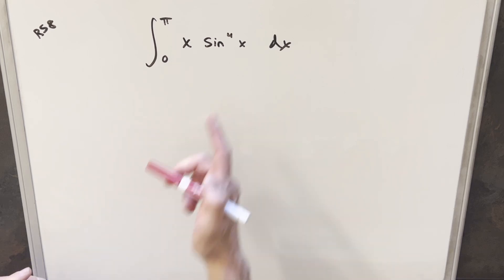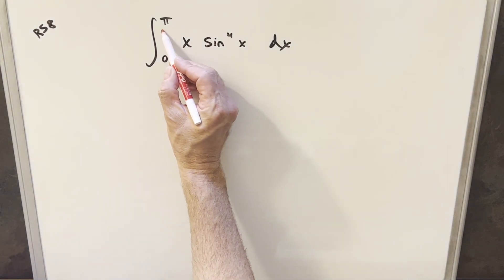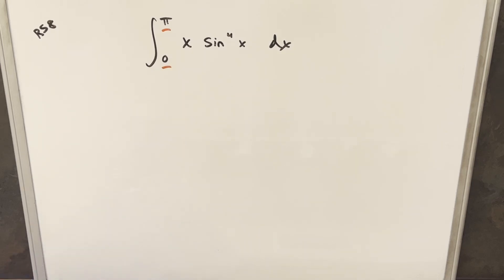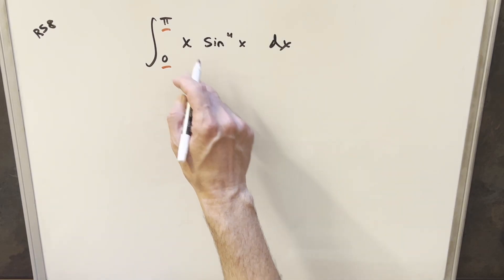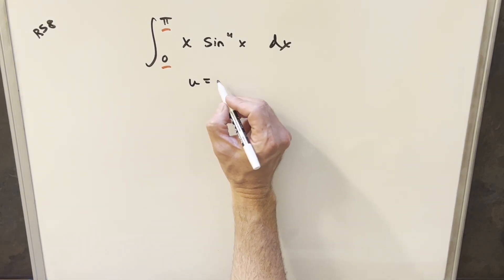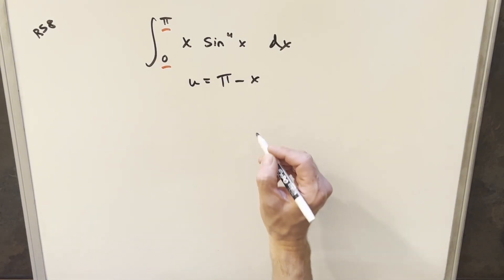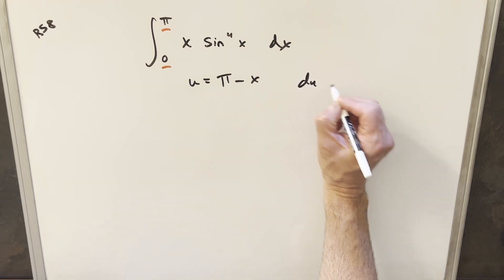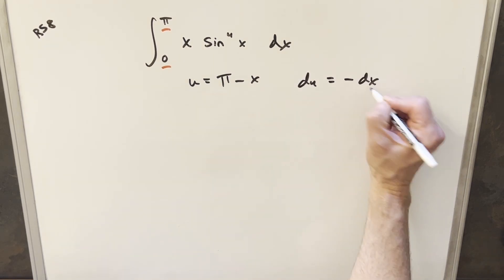The thing I want to look at first is having a trig function with these bounds from zero to pi. I think what I'm going to do is a u-substitution, and I think it's going to work pretty nicely. For this u-substitution using the bounds, I'm going to say my u is going to be pi minus x, and I'll take a derivative, and we find that du is going to be minus dx.